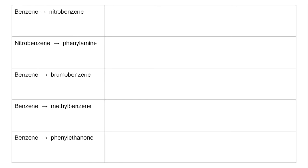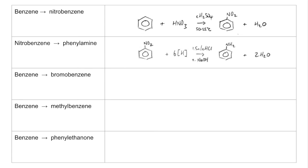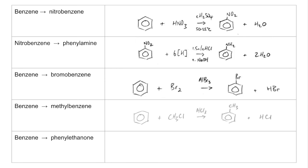Moving on to some specific reactions. Benzene to nitrobenzene — the equation for that reaction is shown. Nitrobenzene to phenylamine requires six moles of reducing agent per NO2 group reduced. Benzene to bromobenzene uses AlBr3 or FeBr3 as the catalyst. Benzene to methylbenzene uses chloromethane to introduce the methyl group, with AlCl3 as the catalyst. Finally, benzene to phenyl ethanone is shown.